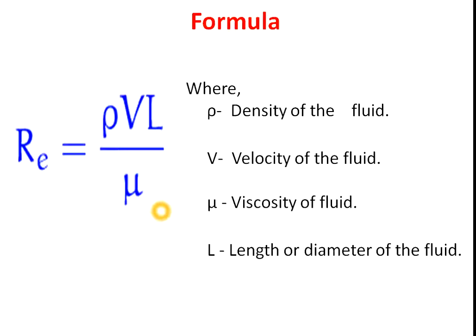The Reynolds number is inversely proportional to the viscosity of the fluid. Higher viscosity gives a lower Reynolds number. For high viscous liquids, the Reynolds number will be small. For example, honey is a highly viscous liquid, so it has a small Reynolds number.